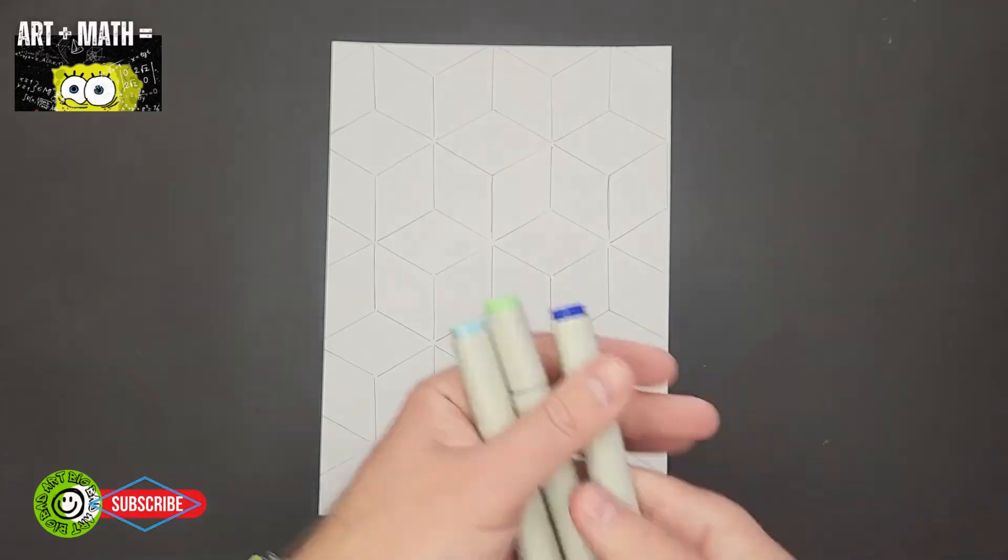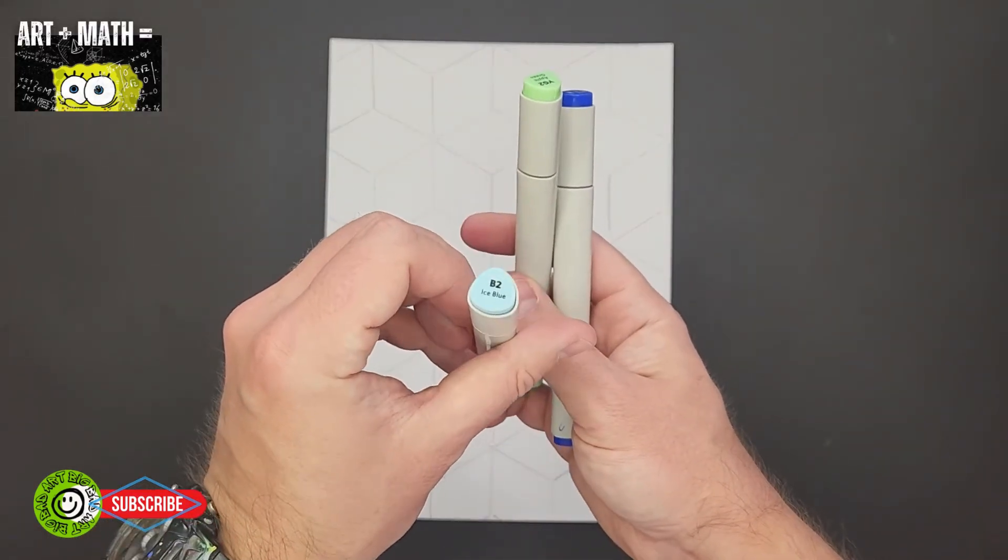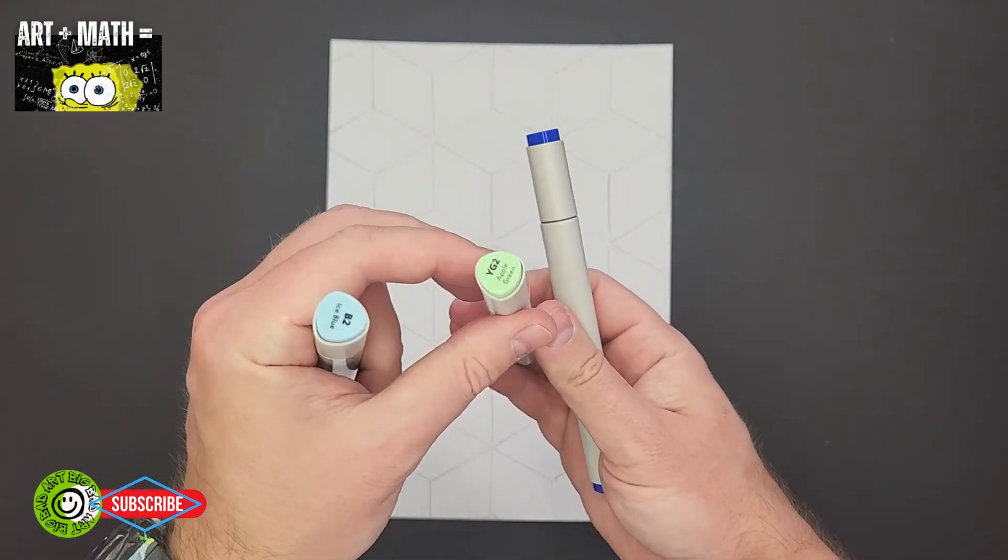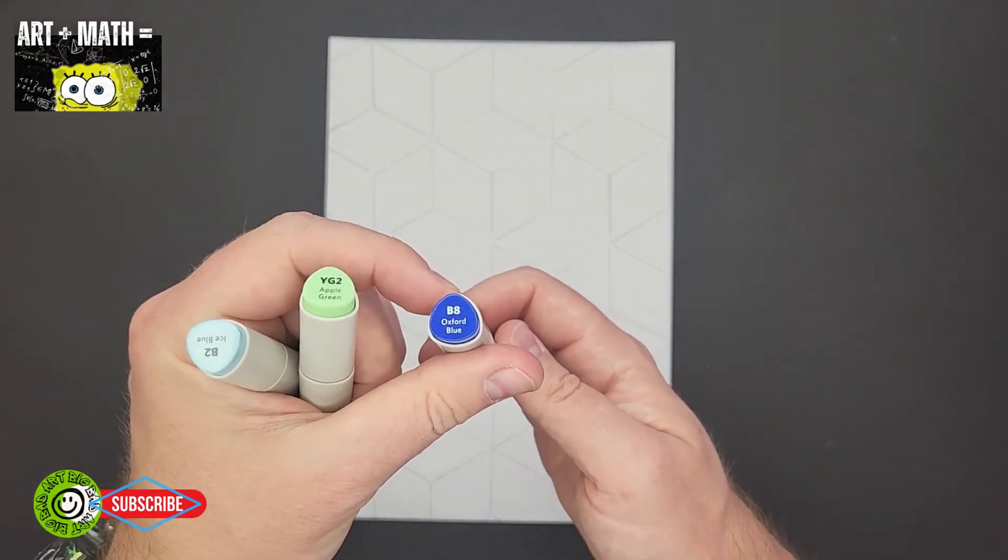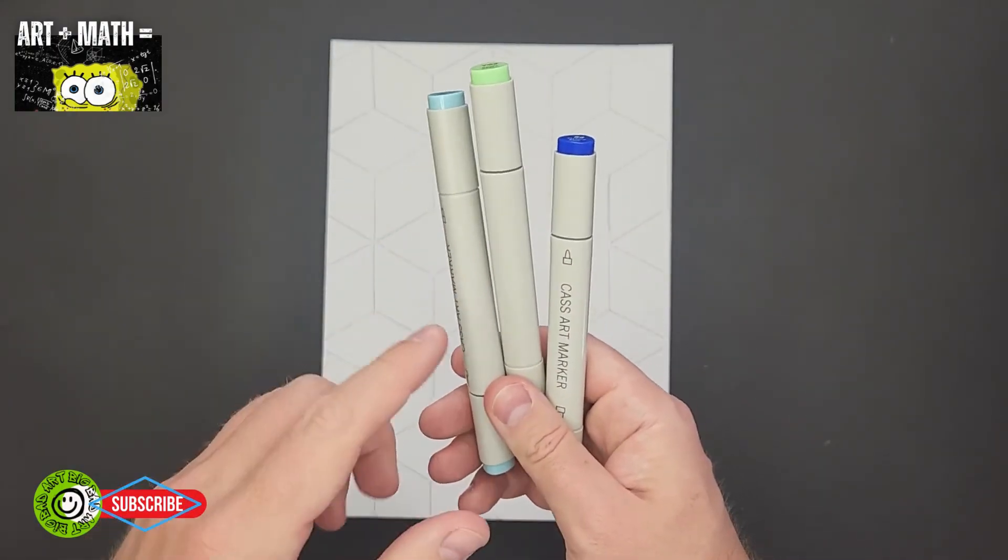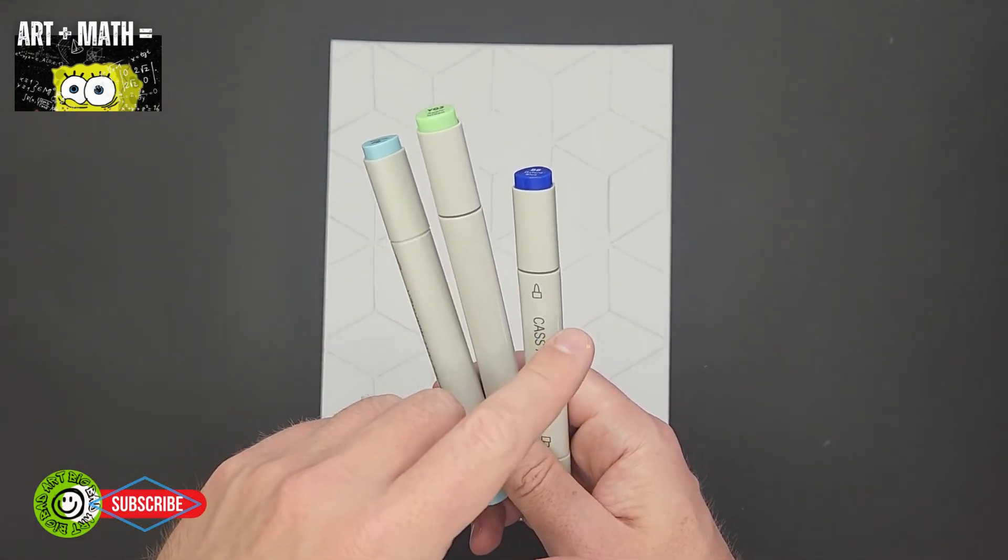So I've got three colors here: Ice Blue, Apple Green, and Oxford Blue. You want three colors, light to dark, okay.